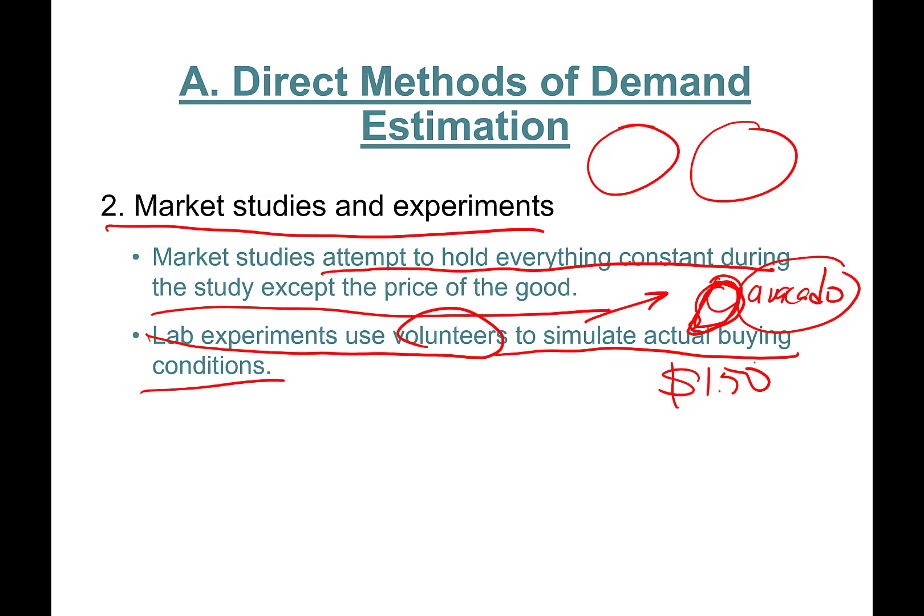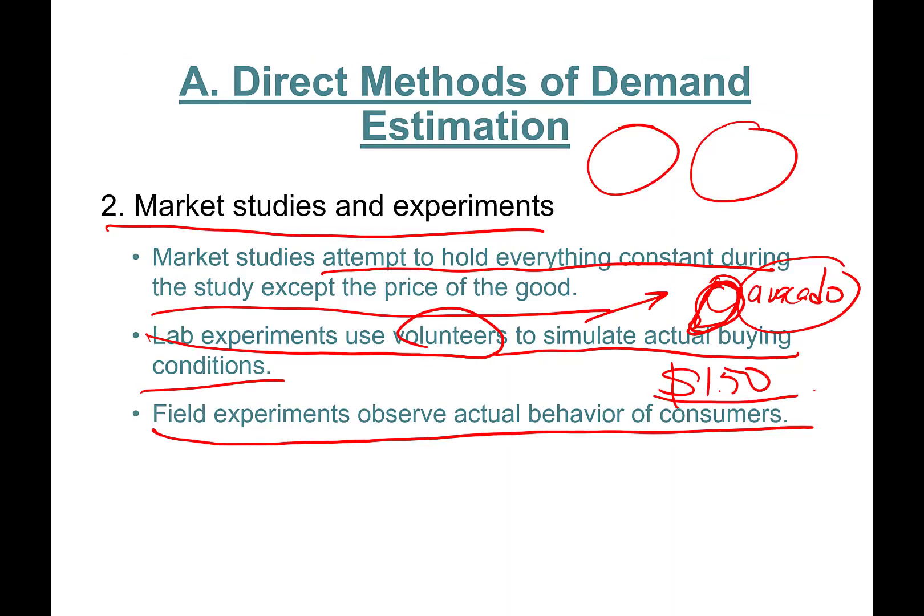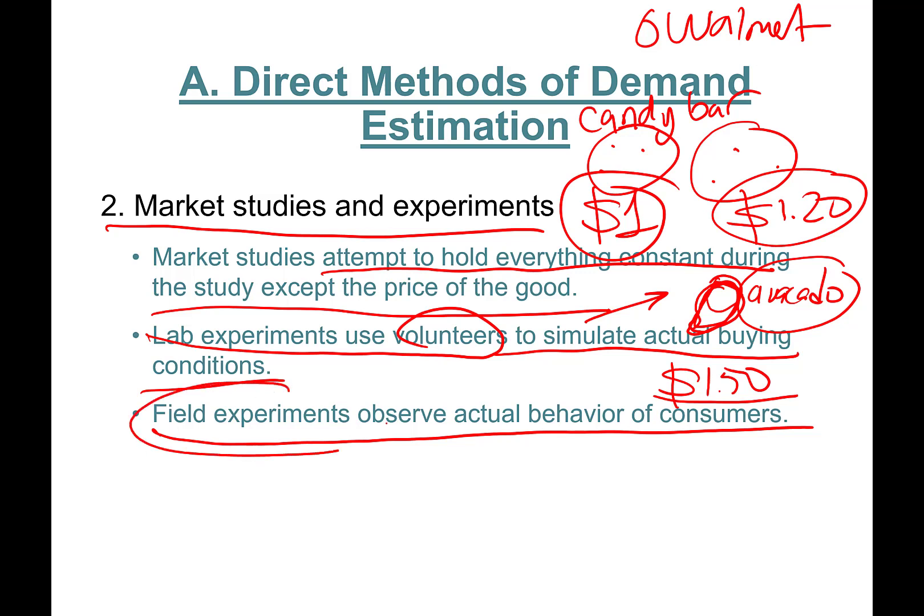Field experiments observe actual behavior of consumers. They're a little different. Let me give you some examples. What they can do is, let's say in the region there are six Walmart stores. In three of them you keep the price of a candy bar like Snickers bar at one dollar. In the other stores you increase the price to $1.20 and you look at people's behavior. This is a field experiment. You can test to see how much people are going to cut down their candy bar consumption.